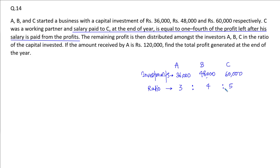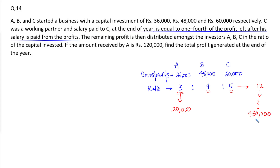The profit received by A is 1,20,000 — that means the '3' part of the ratio represents 1,20,000. The total profit distributed between A, B and C corresponds to 3+4+5 = 12 parts. If 3 represents 1,20,000, then each part is 40,000, so 12 parts equals 4,80,000. The total profit distributed between A, B and C is 4,80,000.